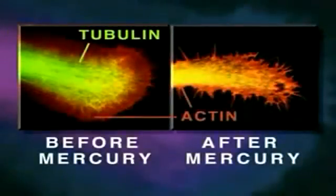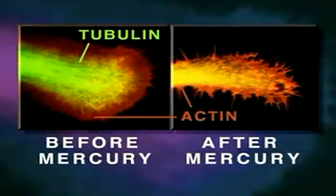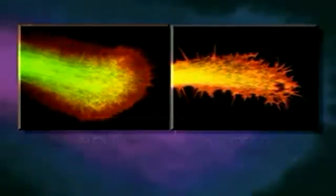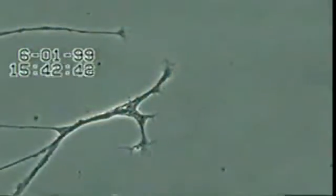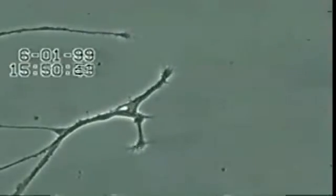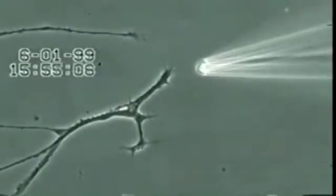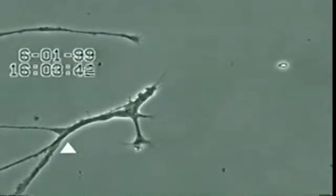Shown here is a neurite growth cone stained specifically for tubulin and actin, before and after mercury exposure. Note that the mercury has caused disintegration of tubulin microtubule structure. These new findings reveal important visual evidence as to how mercury causes neurodegeneration. More importantly, the study provides the first direct evidence that low-level mercury exposure is indeed a precipitating factor that can initiate this neurodegenerative process within the brain.